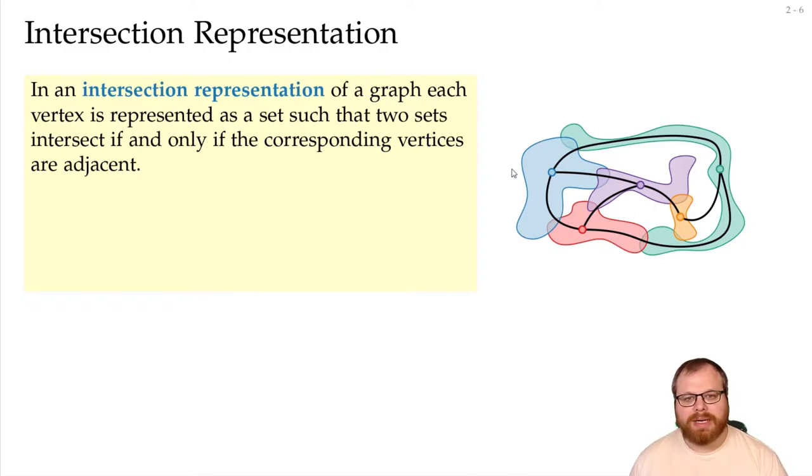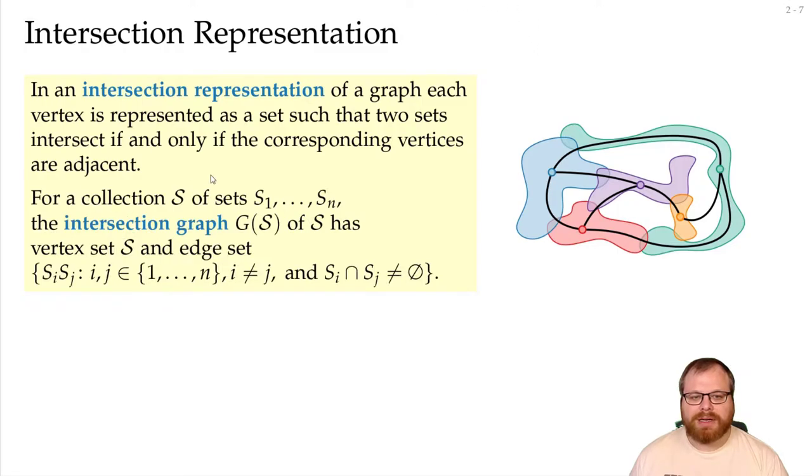But we can also go the other way. Let's say we have a collection of sets, then we can read off the intersection graph from those sets. And the intersection graph has its vertex set exactly the sets, and an edge if and only if the two sets intersect.